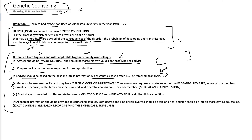The next point is that genetic diseases are specific and have a specific mode of inheritance. There are four main modes: autosomal dominant, autosomal recessive, sex-linked dominant, and sex-linked recessive. All genetic diseases have a very specific mode of inheritance, and this mode must be diagnosed and known before counseling.